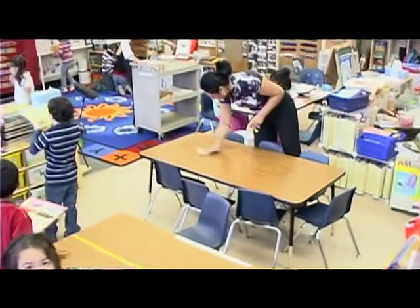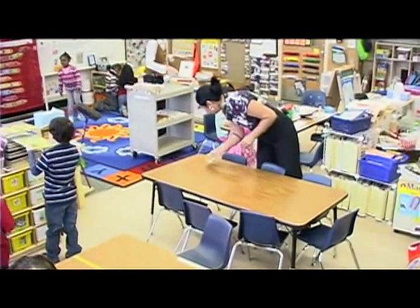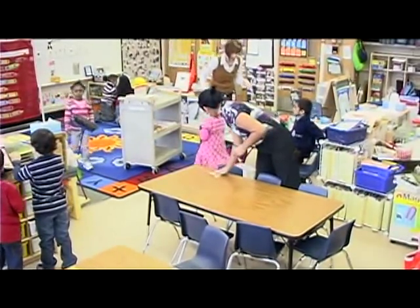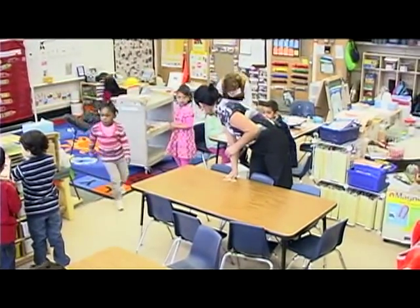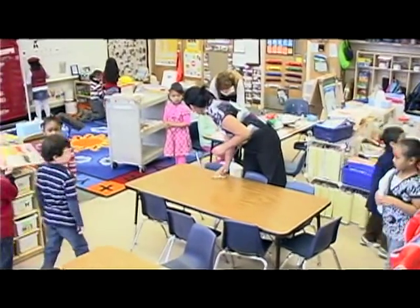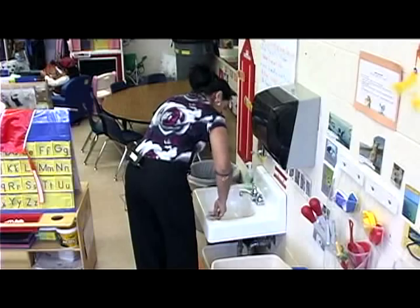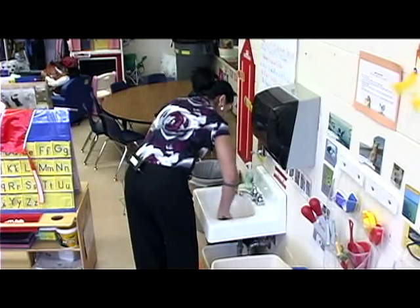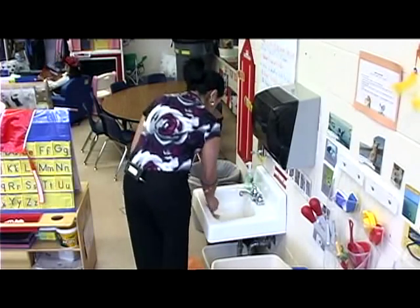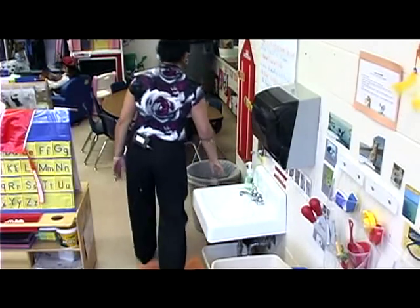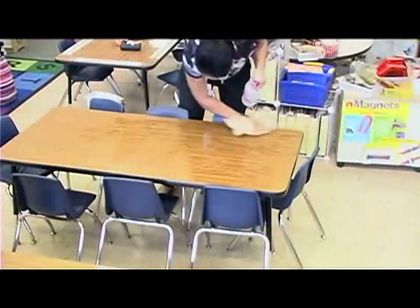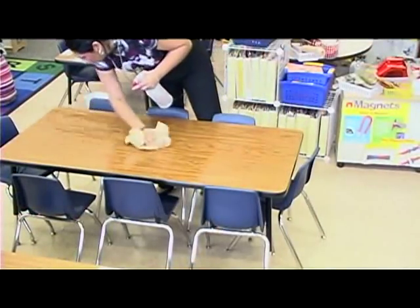While hand washing may be the single most important measure to stop the spread of germs, surface sanitation plays a crucial role in maintaining the cleanliness of the childcare environment and preventing viruses, bacteria, and other microbes from spreading among furnishings, children, and adults.